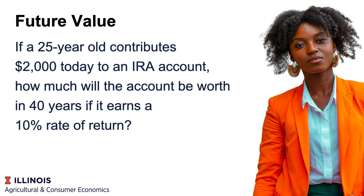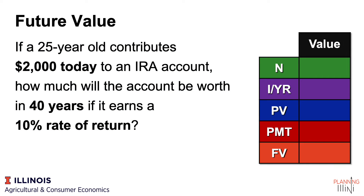To solve this problem, we're going to need to find four time-value-of-money variables and solve for the fifth. We can diagram the problem to help guide us. If a 25-year-old contributes $2,000 today to an IRA, that $2,000 goes in as present value. How much will it be worth over 40 years? As long as our calculator is set to one payment per year, we would put 40 as N.